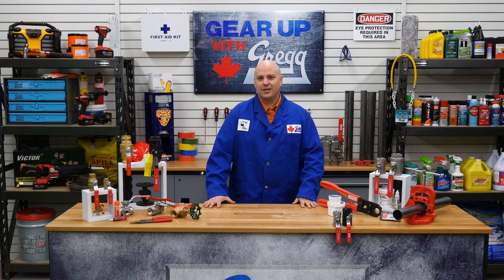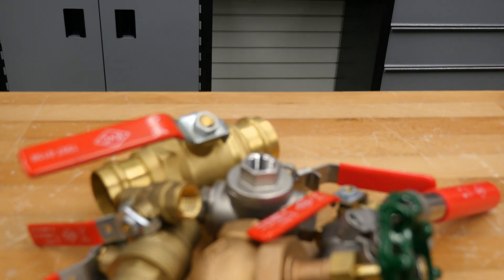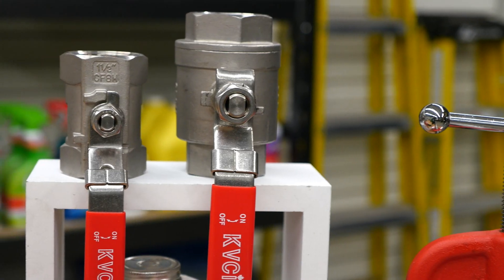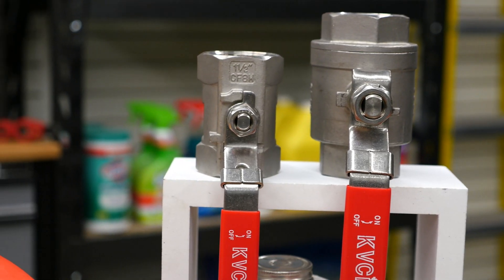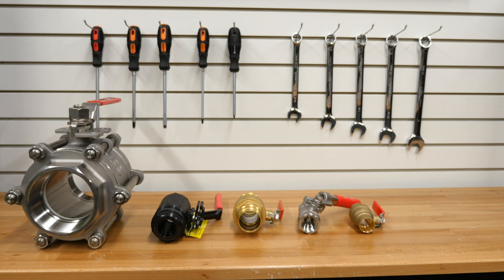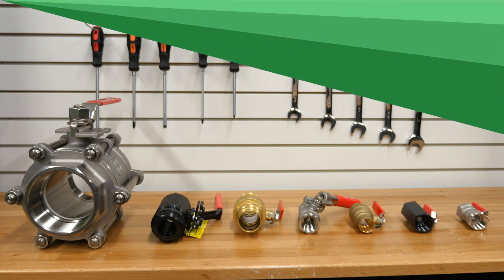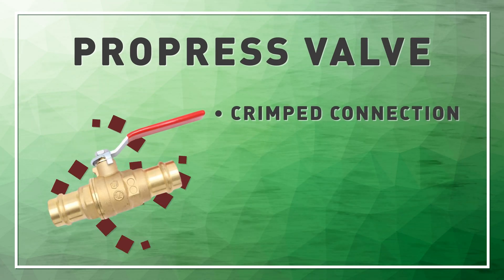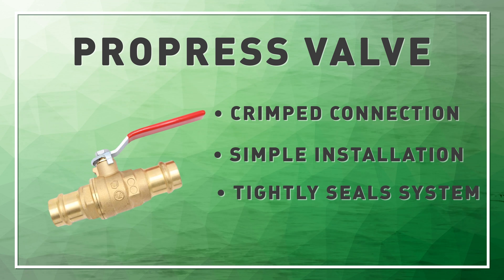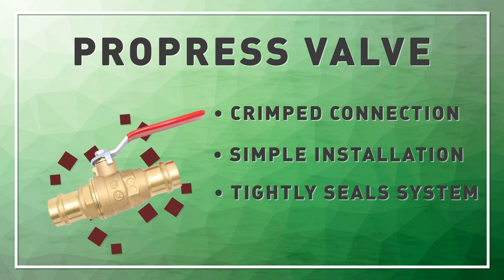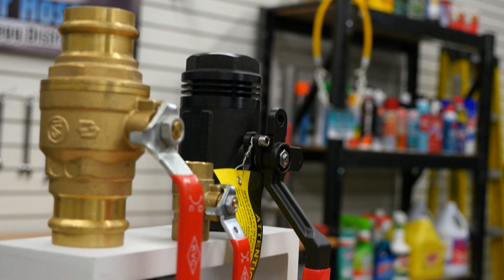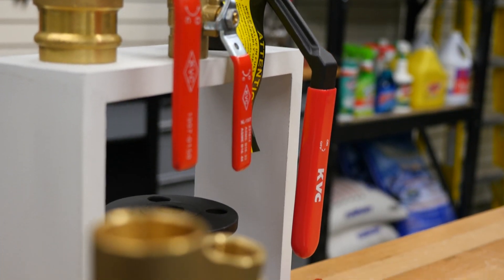So how do you connect your ball valves to your pipes? There are different styles of ball valves available. One of the most common styles are ball valves with NPT threads, which are simple to install. There are also the ProPress valves which connect to your pipes by a crimping method. All you have to do is insert your pipe and with the help of a crimping tool, which you can also find here at Greggs, the crimp tightly seals the system together.